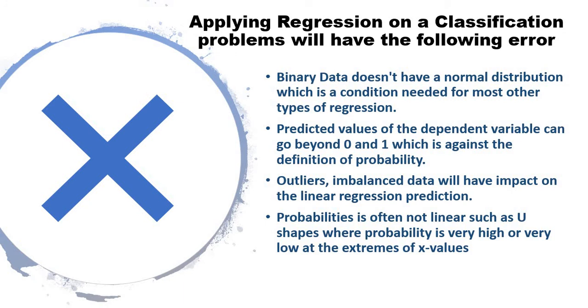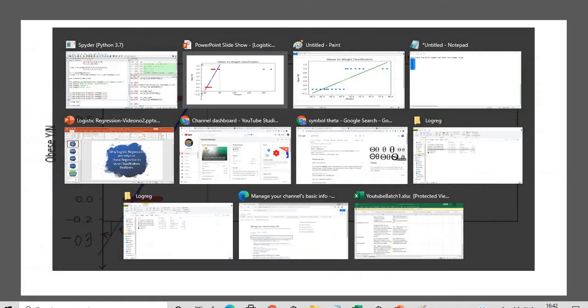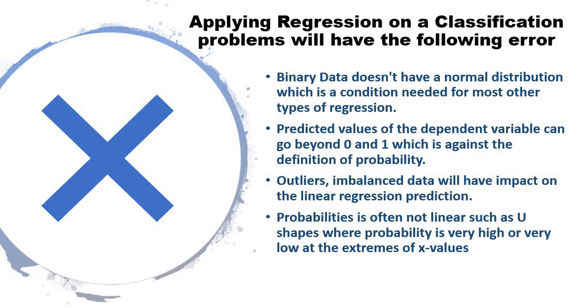Applying regression on classification problems will have the following errors. First, binary data doesn't have a normal distribution, which is a condition needed for most other types of regression. Second, the predicted values of the dependent variable can go beyond 0 and 1. If you see here, for weight 80 my value is 1.2, and for 25 kilograms my value is around minus 0.3. This goes against the laws of probability - you can have values between 0 and 1, but not 1.2, 1.5, or 1.6. That's why we cannot use linear regression.